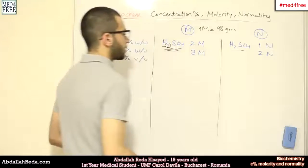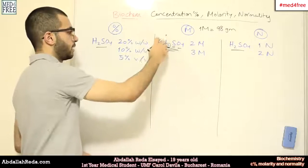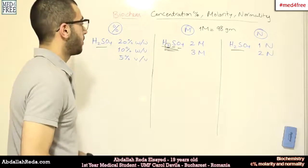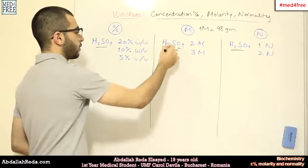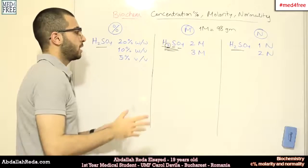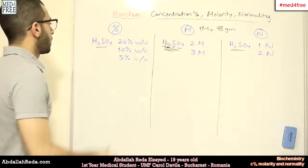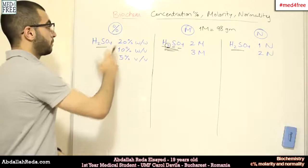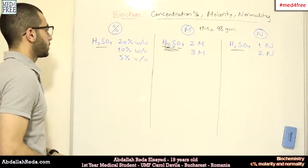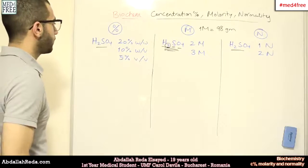So, as simple as you saw, you just plug in the values of atomic masses according to the number of atoms and you get the molar mass. Now, beginning with the concentration percentage, we have three types.